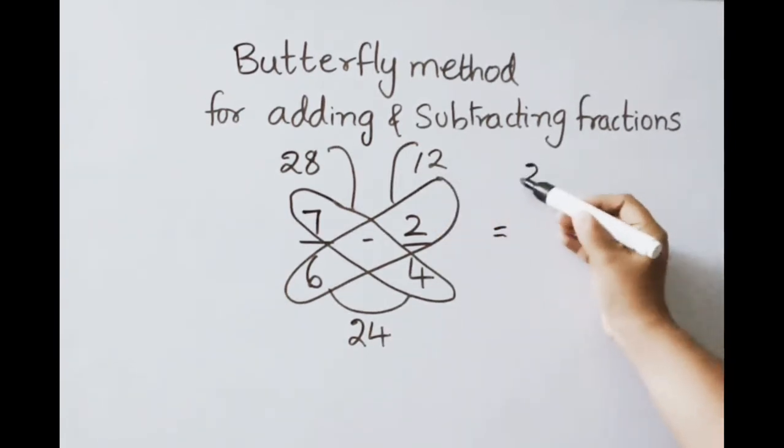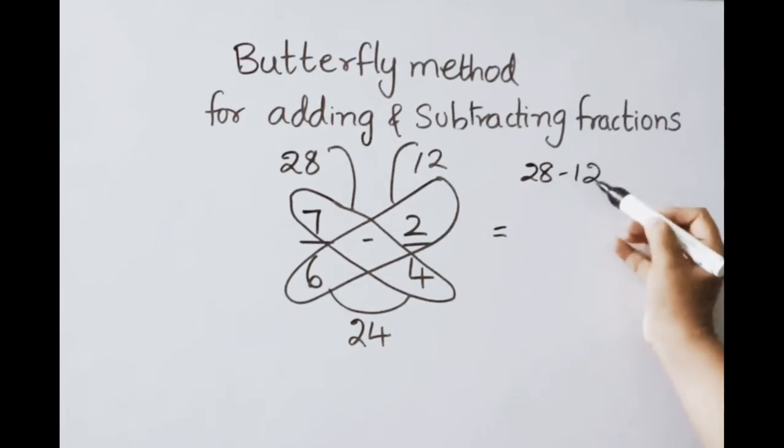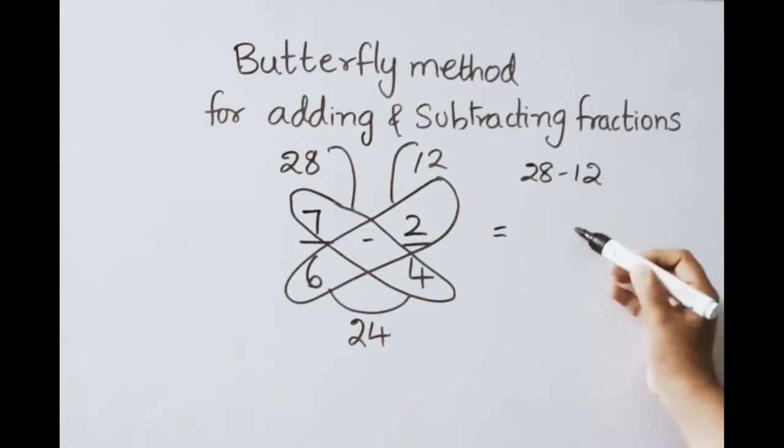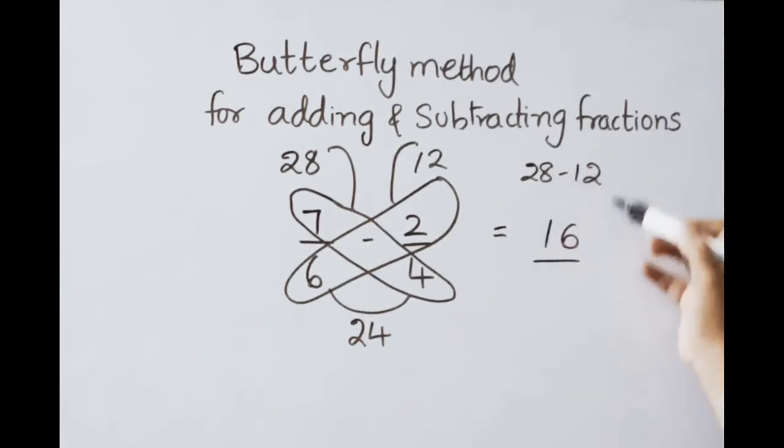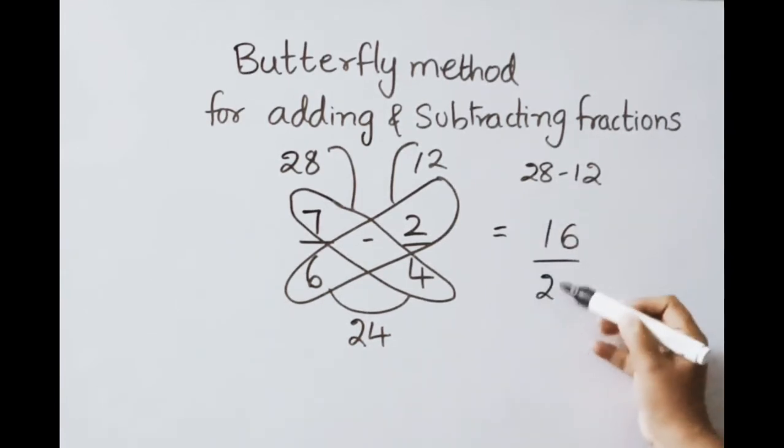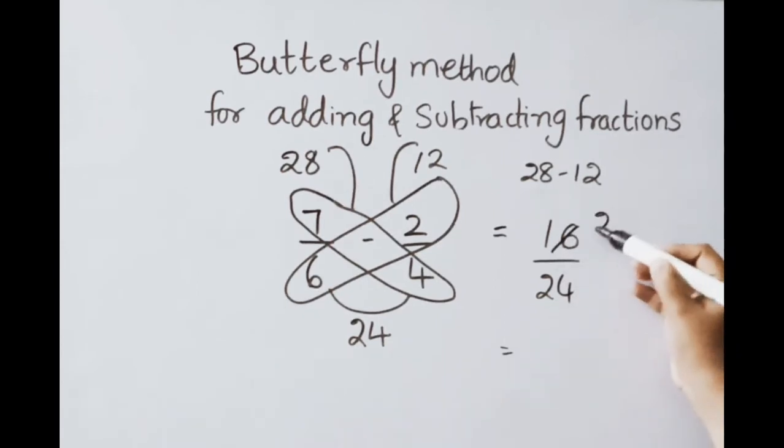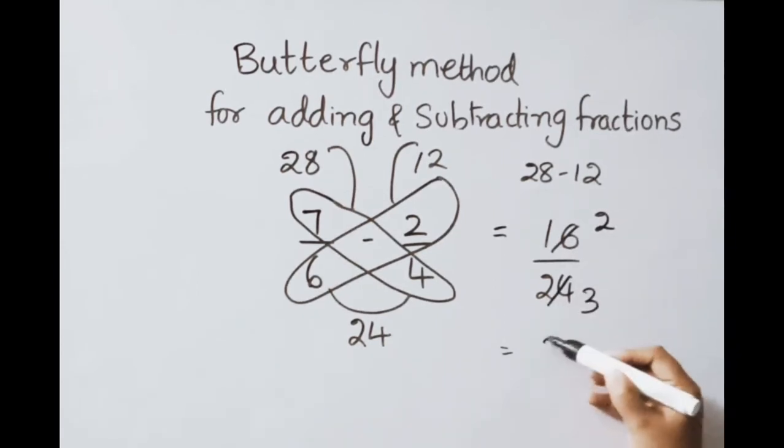Write on 28 minus 12. How much it is? 8 minus 2, 6. 2 minus 1, 1. So 28 minus 12, 16. Write on this 24. 8 table, 8 2's are 16, 8 3's are 24. So the answer is 2 by 3.